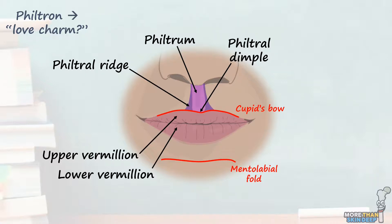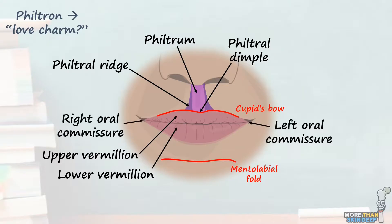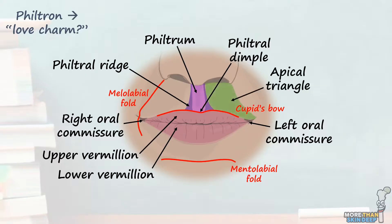The last parts of the oral region to be aware of are the corners of the mouth, properly known as the left and right oral commissures, the melolabial folds, which are these creases either side of the mouth better seen when smiling, and the apical triangle, which is a portion of skin between the lateral cutaneous upper lip and the alar.